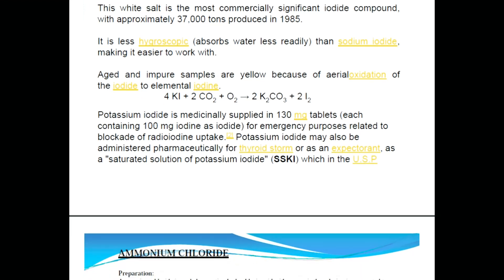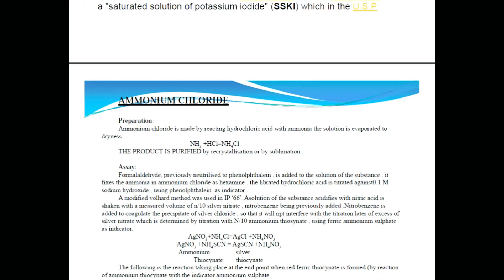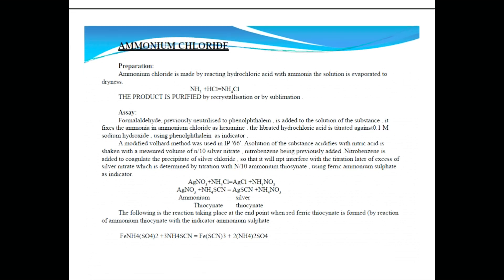Ammonium chloride is prepared by reacting hydrochloric acid with ammonia. The solution is evaporated to dryness, and the product is purified by recrystallization and sublimation.